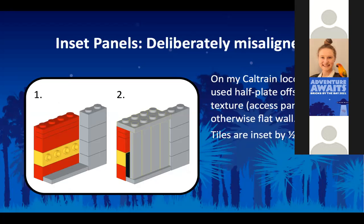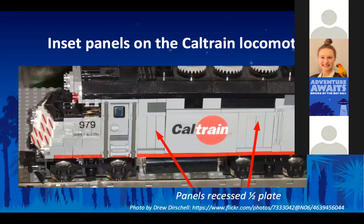This is another use where I've deliberately misaligned the parts. If you put a SNOT brick followed by a plate followed by some tiles, those tiles will not reach to the edge of the bricks around them. But that can be useful if you're trying to build something like a locomotive which has doors with inset panels. Here's a photograph of my Caltrain locomotive — it's an F40PH — and it has those inset panels on the door.